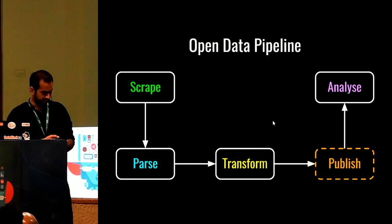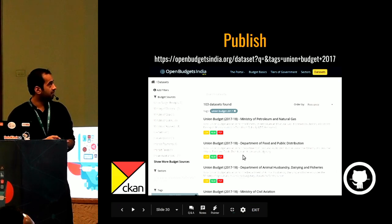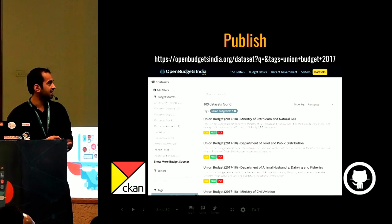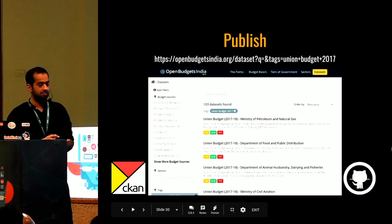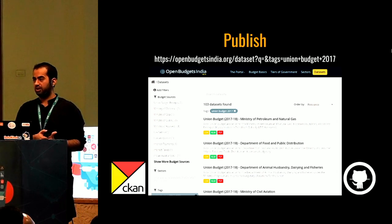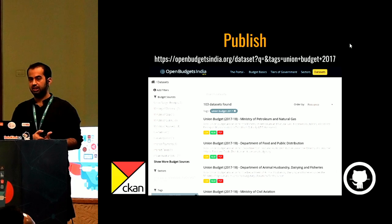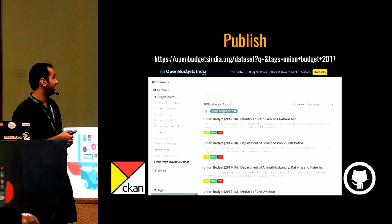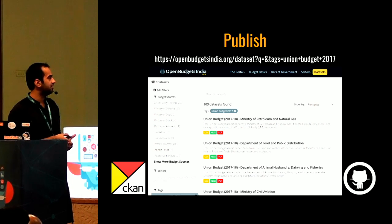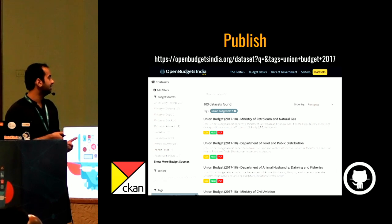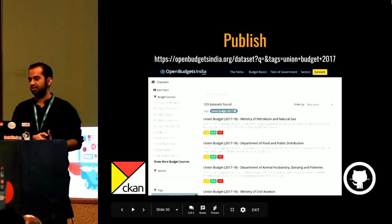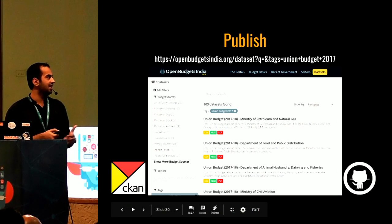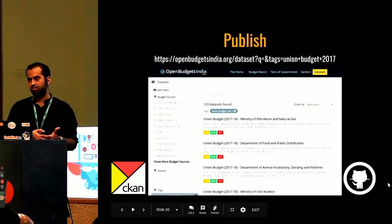Next, we publish. For publishing the datasets, we follow CKAN — a platform that enables open data publishers to publish their data in a much more structured format. You can add detailed metadata, descriptions, and see what formats are available for a particular dataset. There are keywords, sources, and tags available for each dataset, which is really helpful for anyone trying to consume this data.